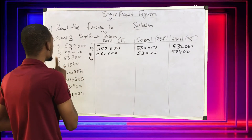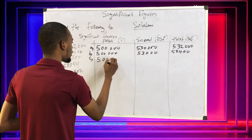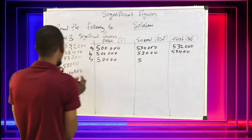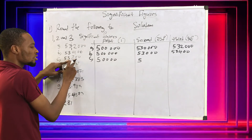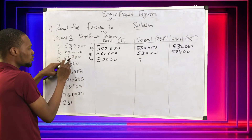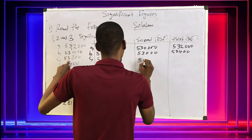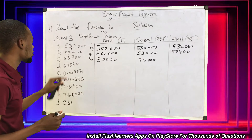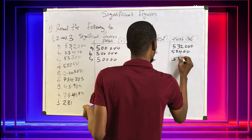C: To one significant figure is simply 50000. To two significant figures: the second significant figure has a number close to it that is more than 5, so we approximate — we increase it by 1 to make it 4. So this becomes 54000. This is already in three significant figures, so we just have 53800.